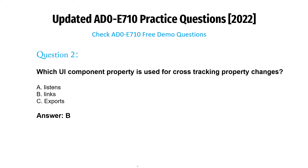Question 2. Which UI component property is used for cross-tracking property changes? A. Listens. B. Links. C. Exports. Answer: B.